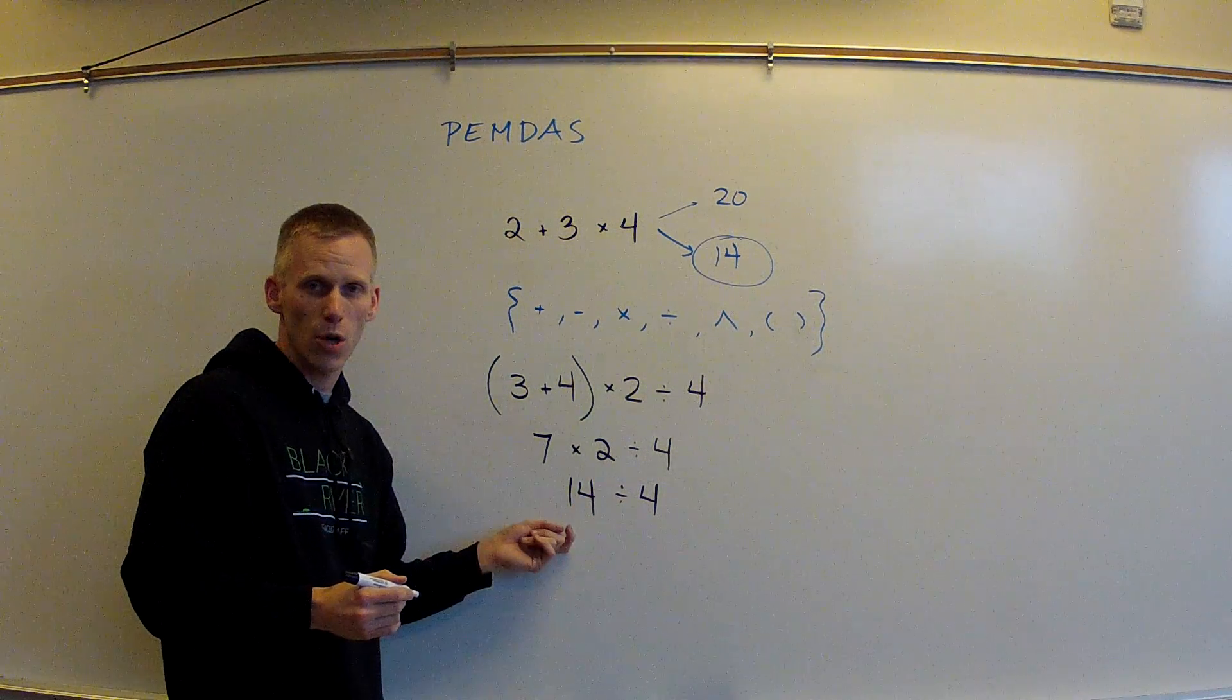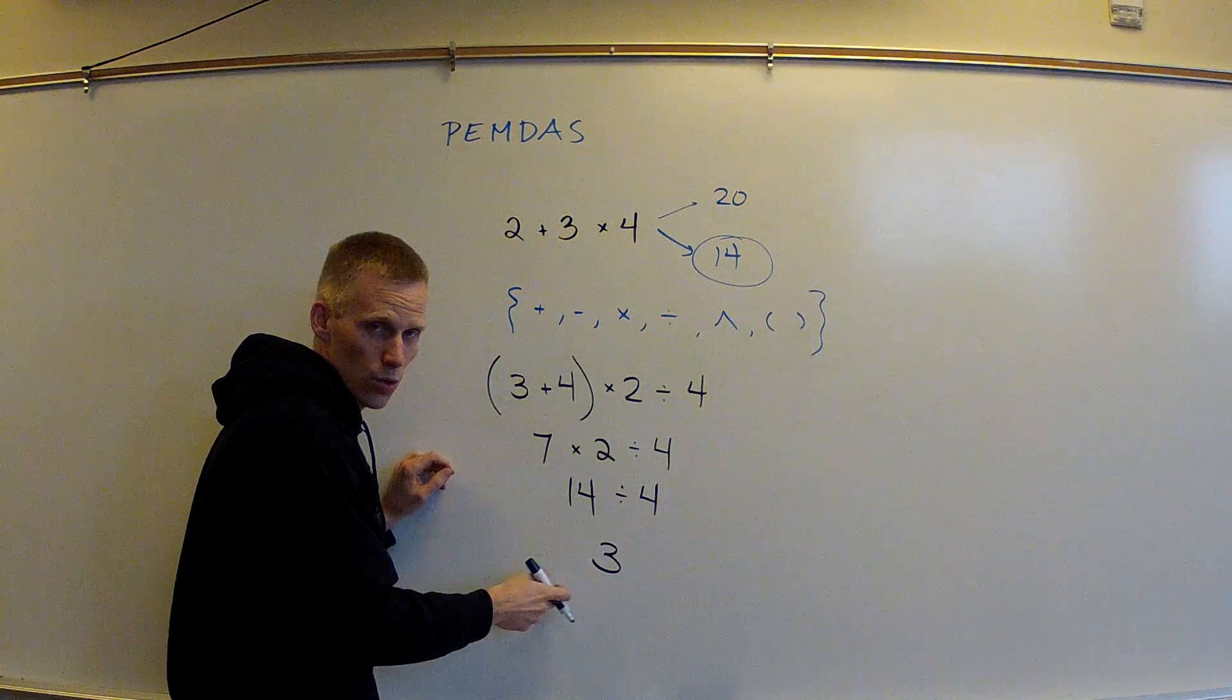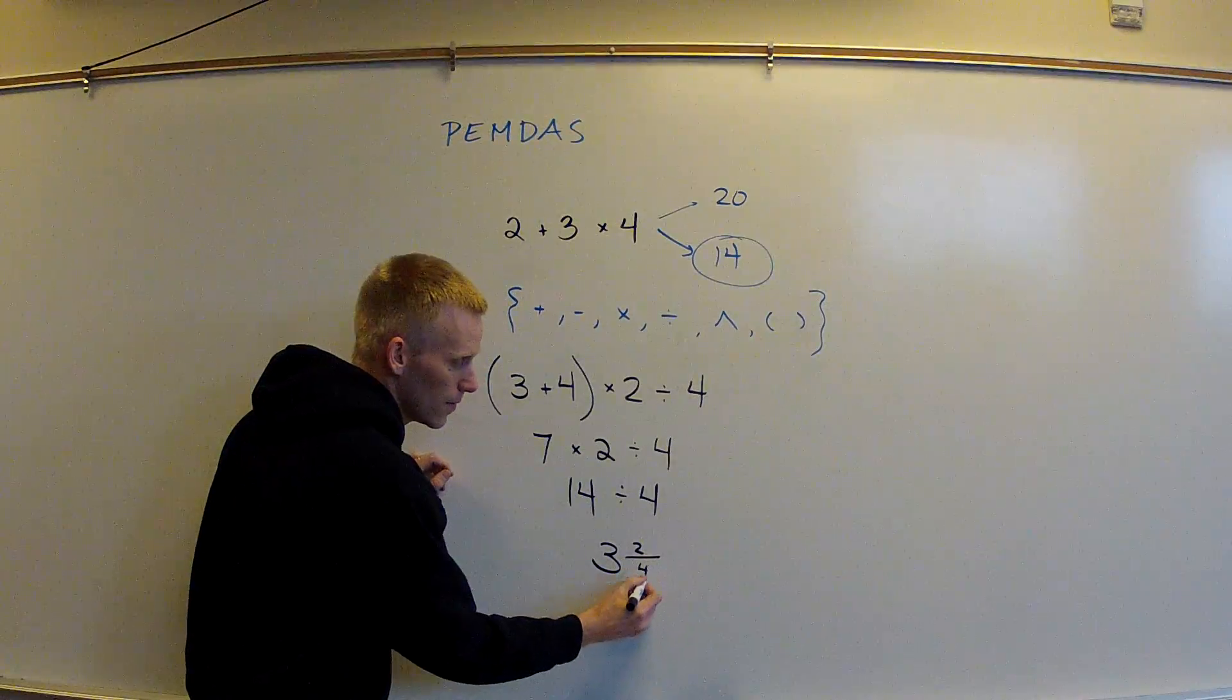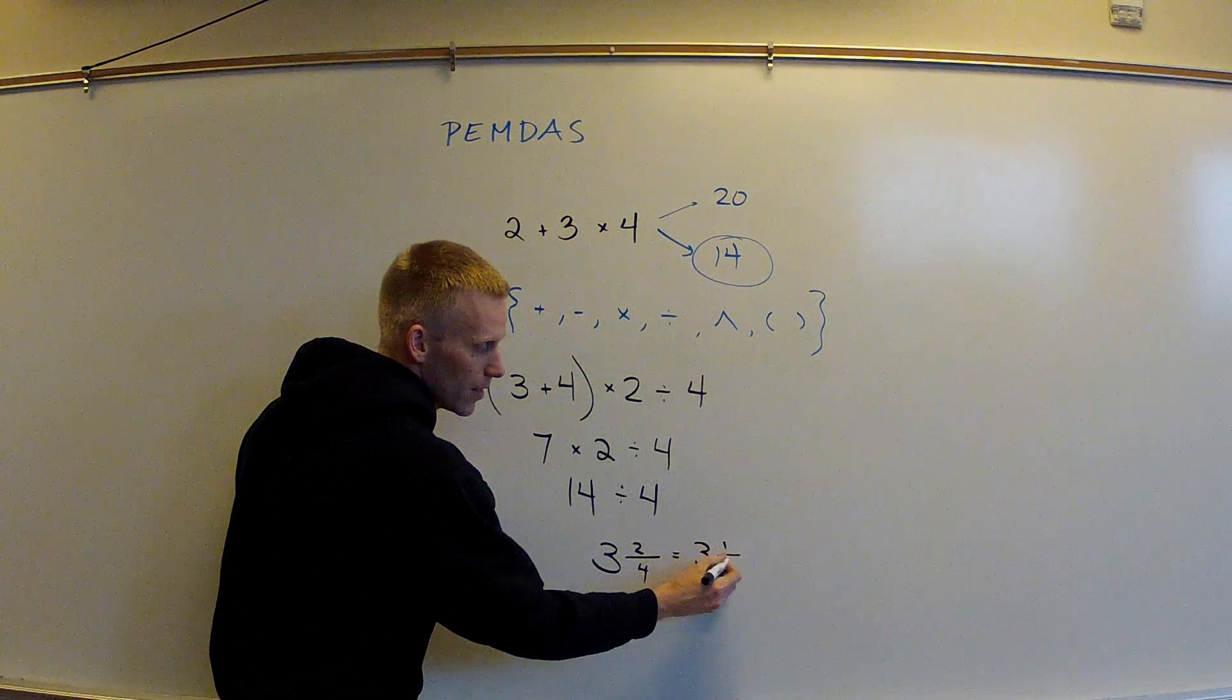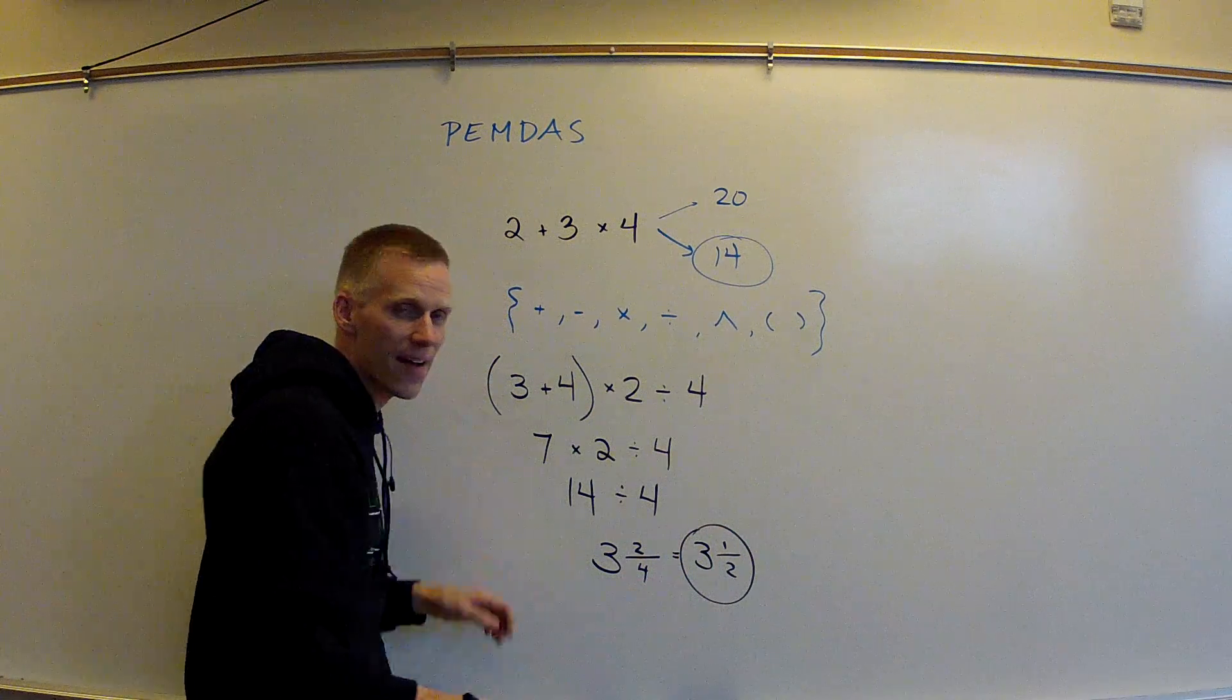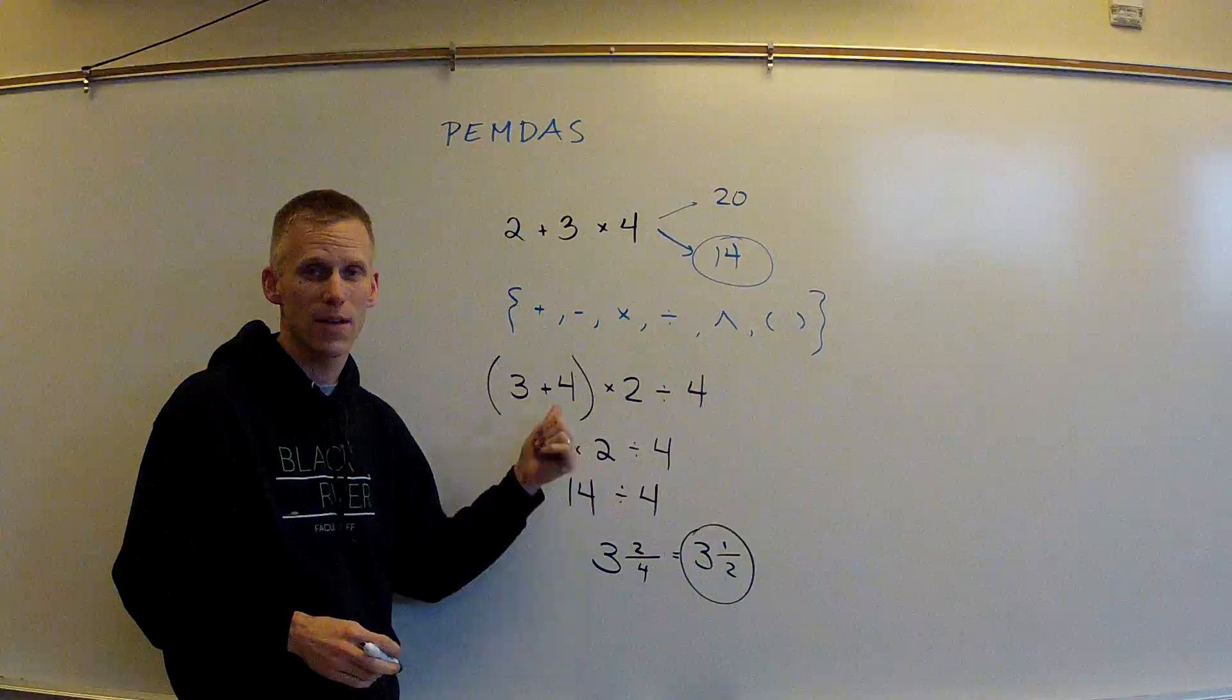How many fours go into 14? We know that goes in there three times for a total of 12, remainder of two. Denominator stays the same. That could be simplified to three and a half. Three and a half is the only solution that could be correct for this expression.